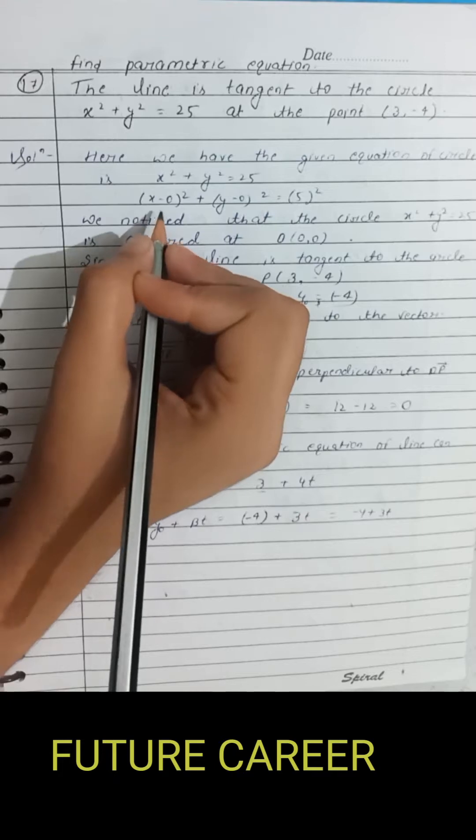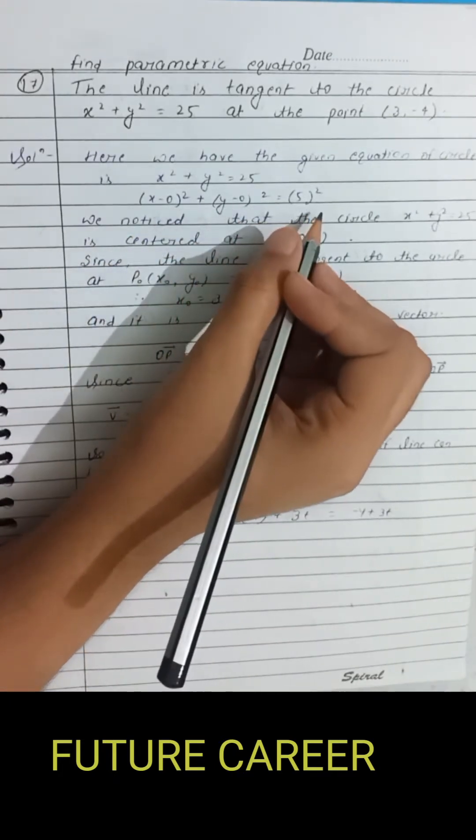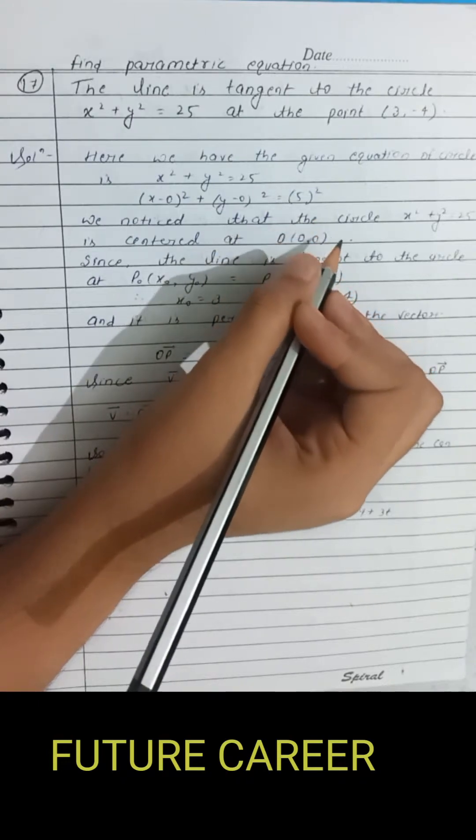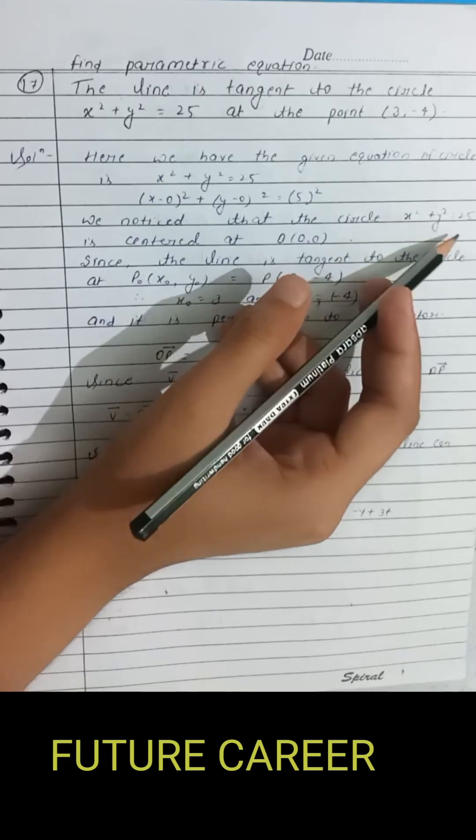Where x1 and y1 is the center of the circle, so we notice that the circle x squared plus y squared equals 25 is centered at O (0, 0).